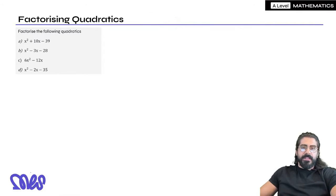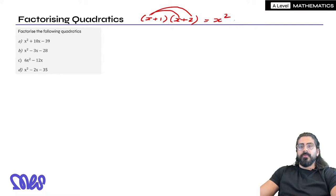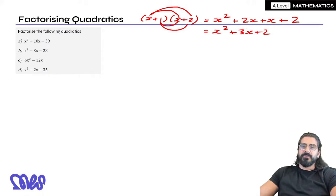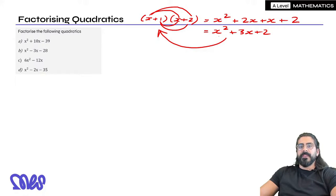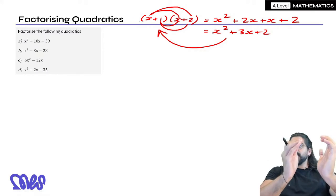What we're doing is the opposite of expanding. So if I had something like x plus 1 times x plus 2, then if we were to expand that, we would have x times x which is x squared, then x times 2 which is 2x, then 1 times x which is just x, and then 1 times 2 which is just 2. That simplifies to x squared plus 3x plus 2, because 2x plus x is 3x. So by factorizing, we're going the other way around — rewriting x squared plus 3x plus 2 as the multiplication of two brackets.